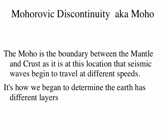Seismic waves are going through the crust — basically a solid — they hit the mantle, which is kind of plastic-like flow, and the speed changes. And it's how we begin to determine that the Earth has different layers. The Moho, which is pretty cool — we'll even talk about that more in class.